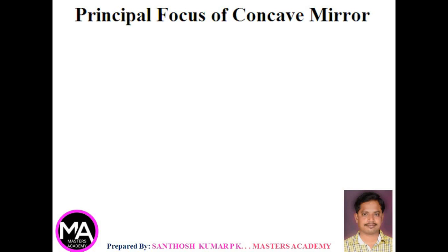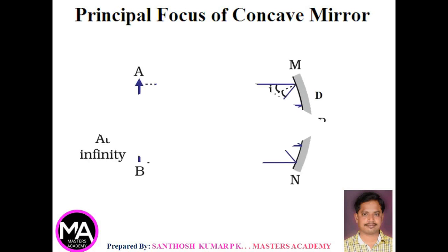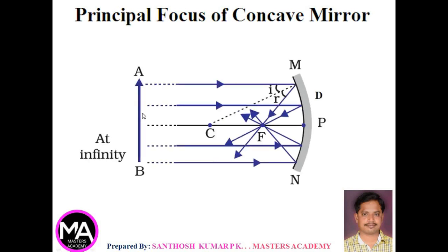Principal focus of concave mirror: whenever an object is at infinity, the rays coming from the object are parallel rays. The parallel rays incident on the mirror, after reflection, meet at a common point — that point is what we call the principal focus. The distance of the principal focus from the pole is known as the focal length of the mirror.